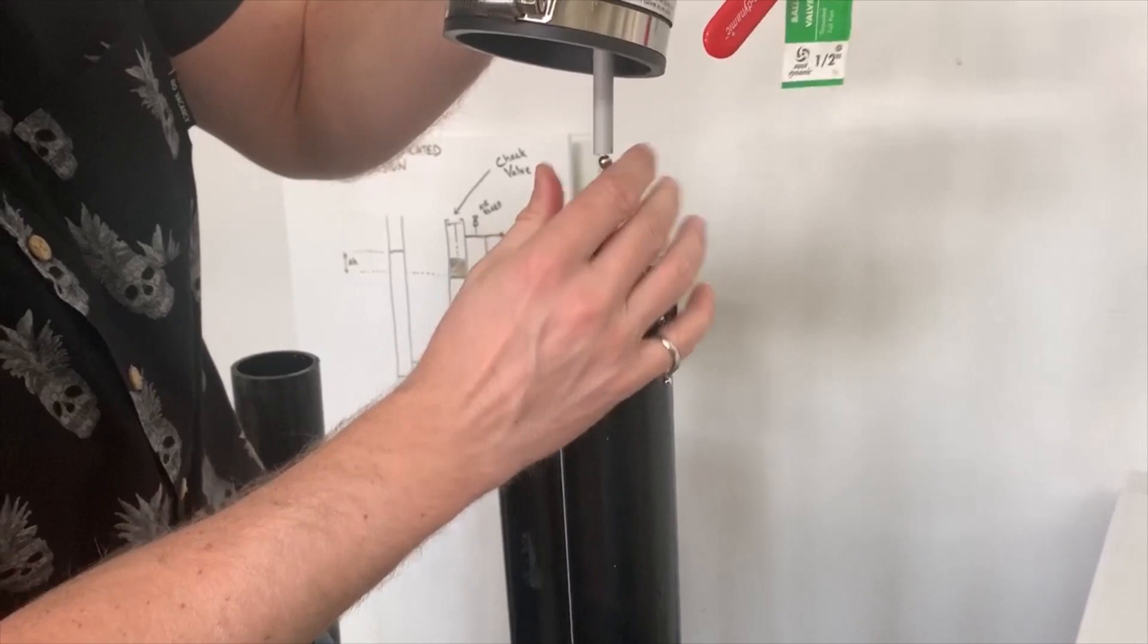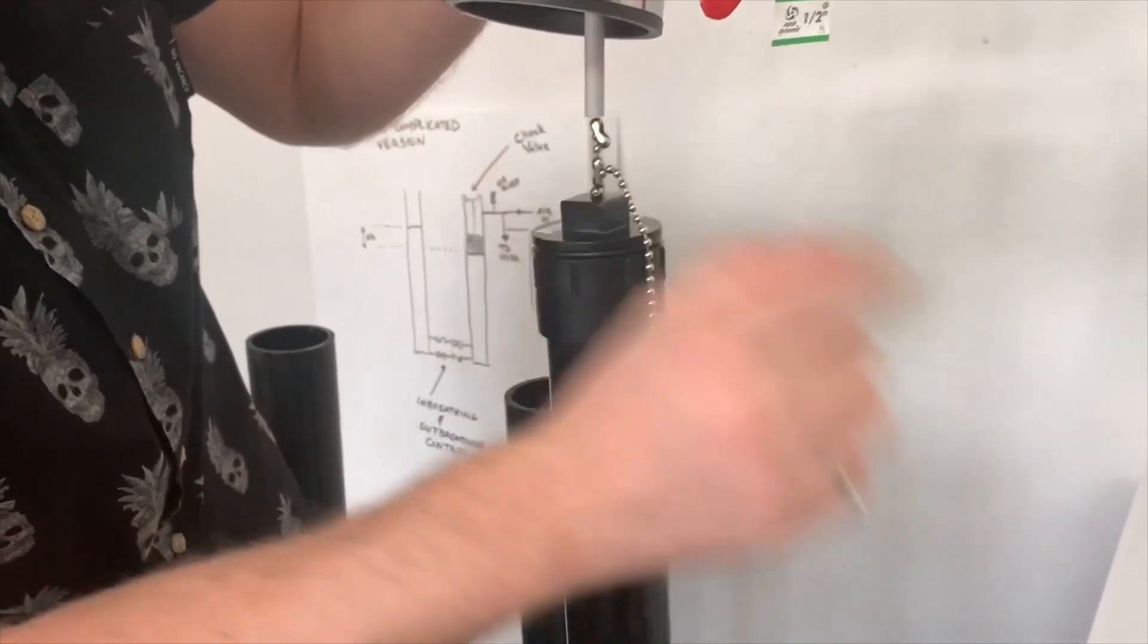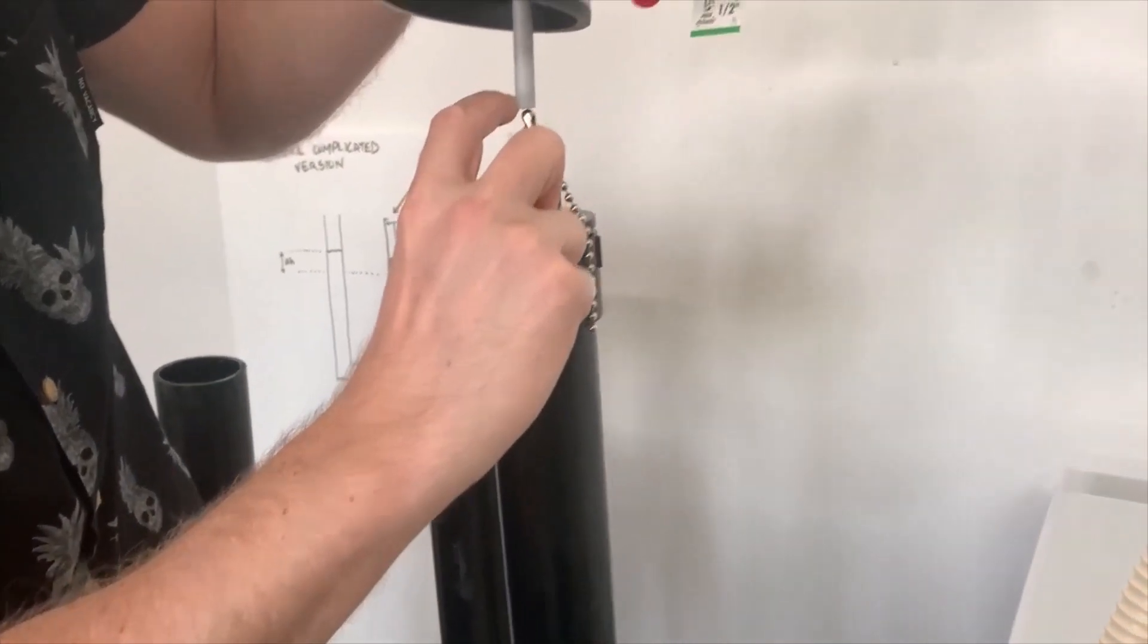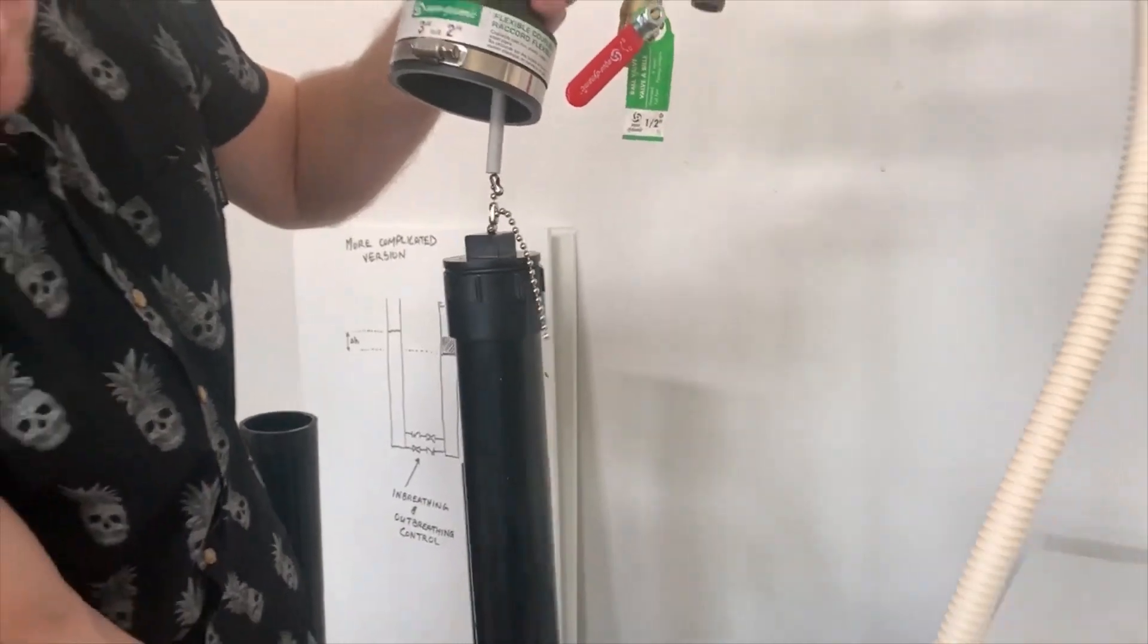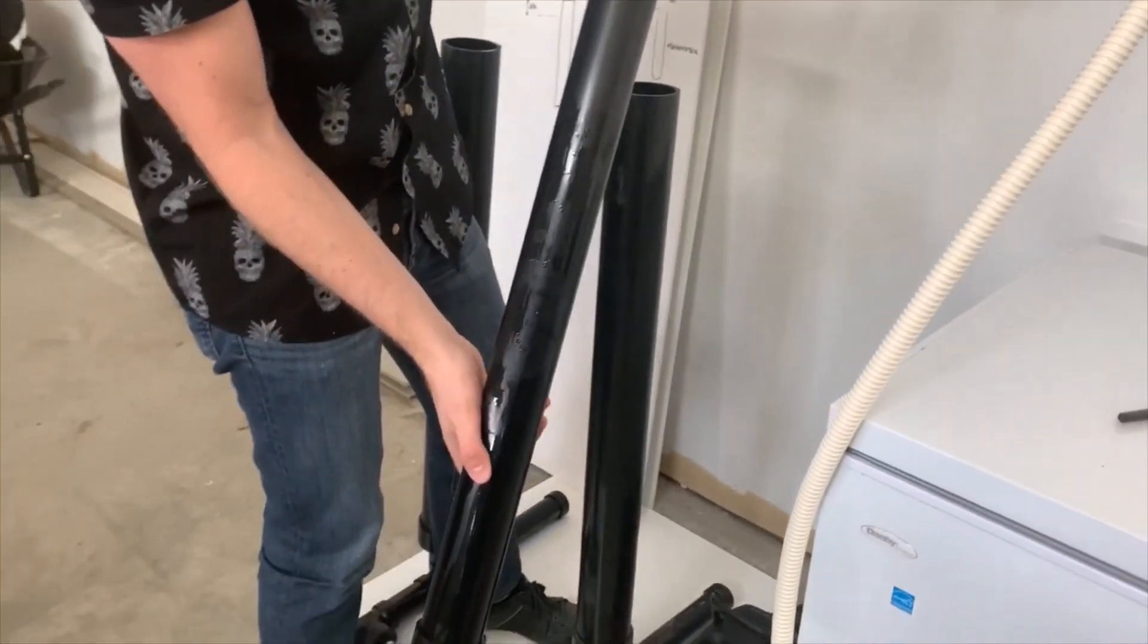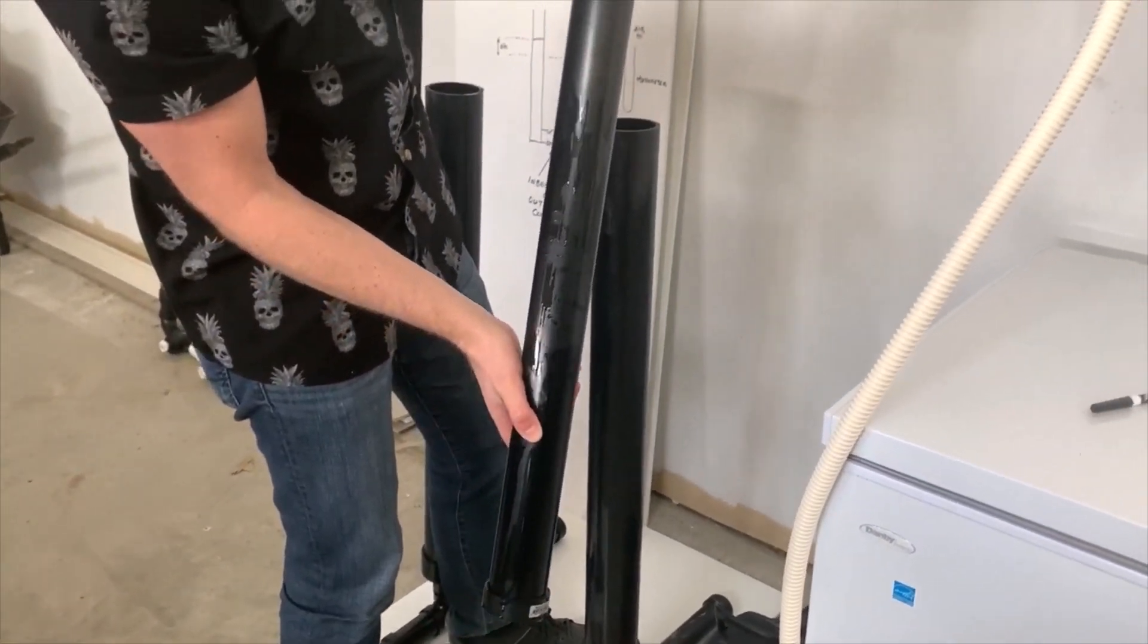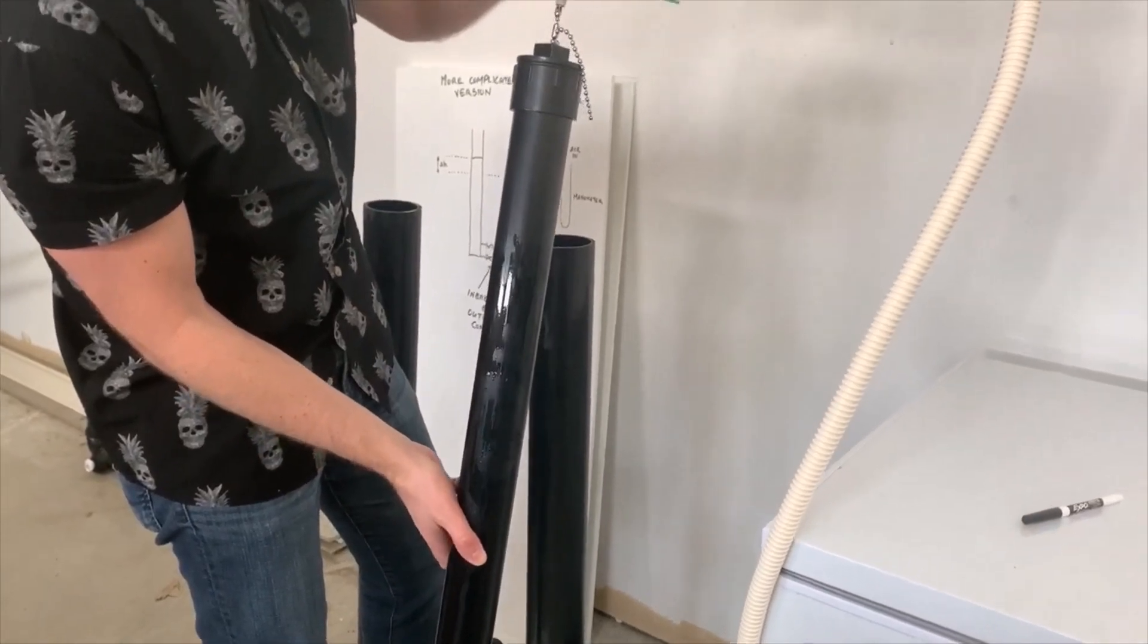If you want more pressure coming out to the mask, you can increase the length of the chain. Inside this float, I have about a pound of washers to ensure it pulls the valve open on every stroke.